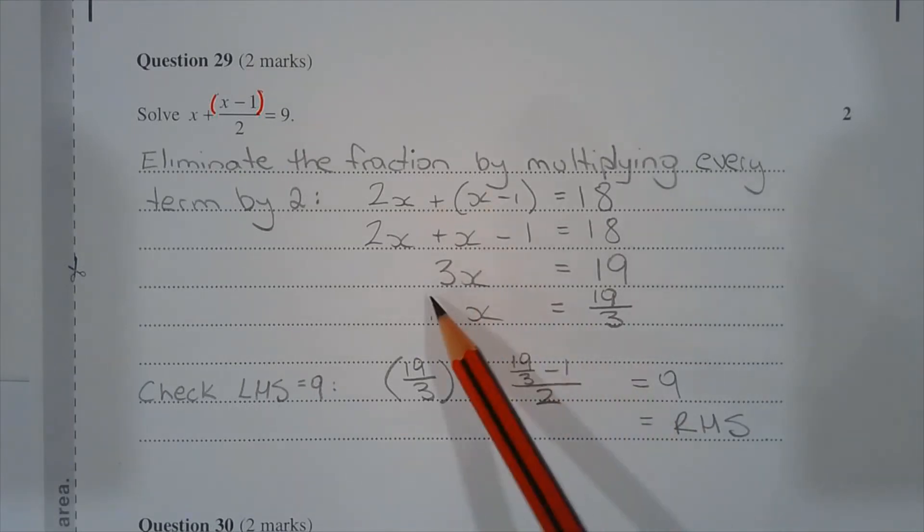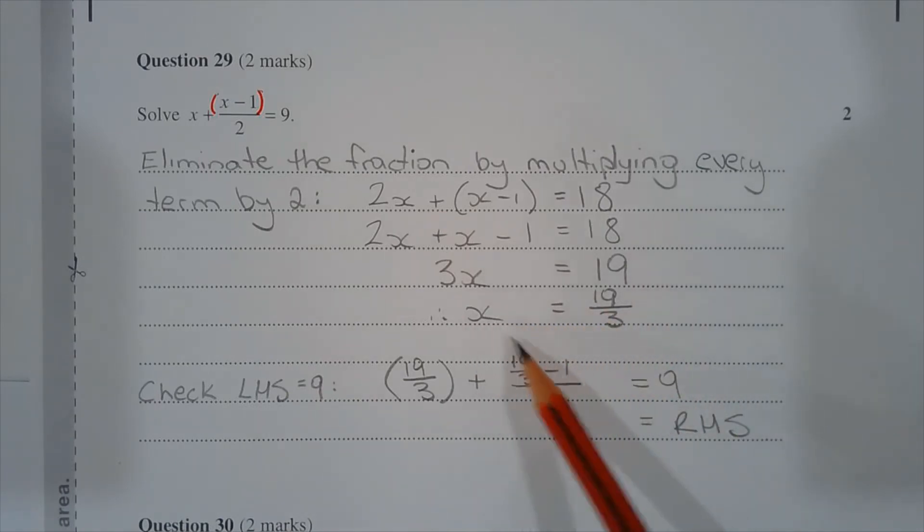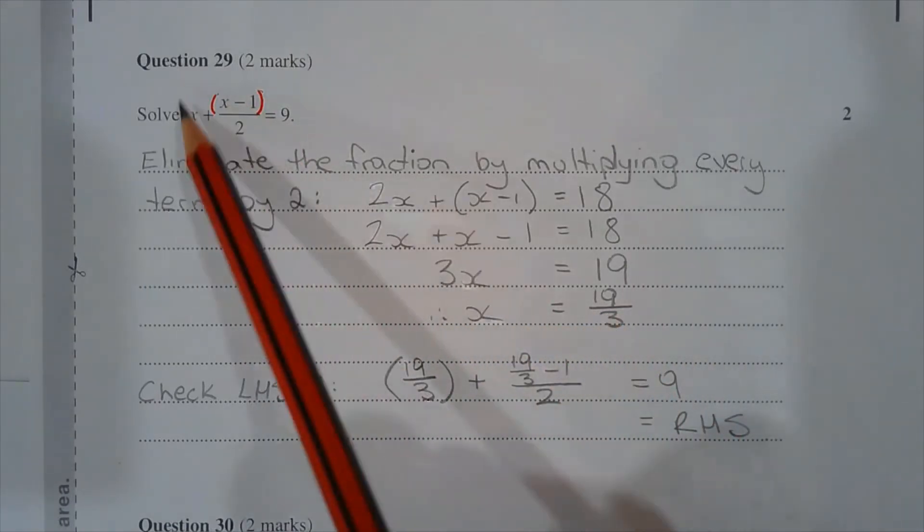Finally, dividing both sides by 3, we have x is equal to 19 over 3. Now we can check the solution by substituting 19 over 3 for x in the left-hand side of the equation.